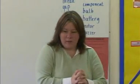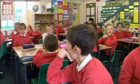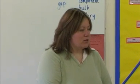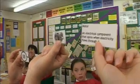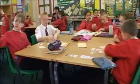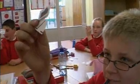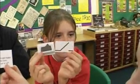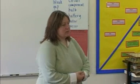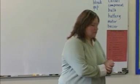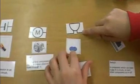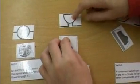The teacher asks one person in each pair to show their matched picture, symbol, and definition for a motor. Students hold up their cards. The teacher then asks the class to discuss the bulb component at their tables, noting that one image appears to show a bulb attached at the bottom.